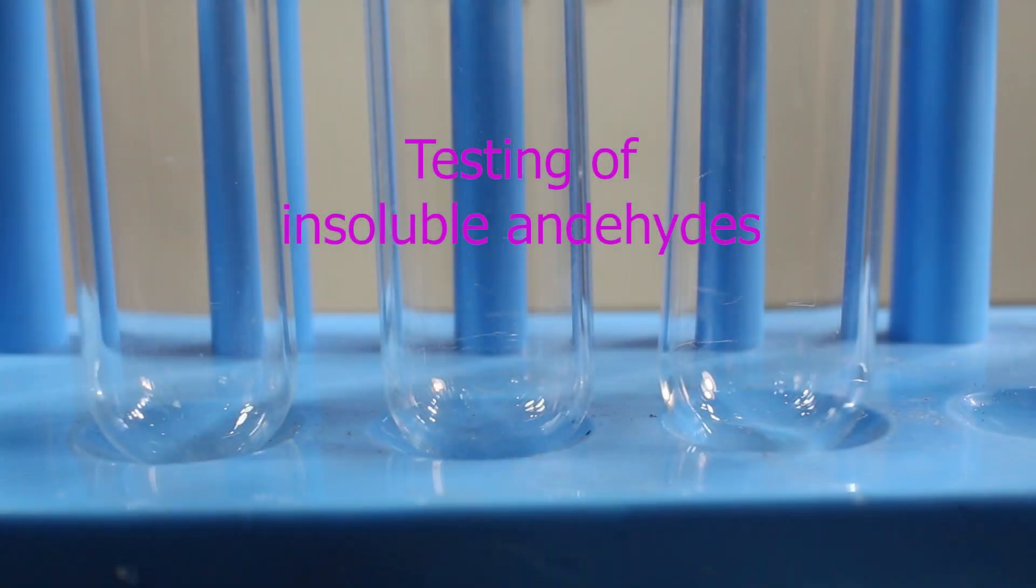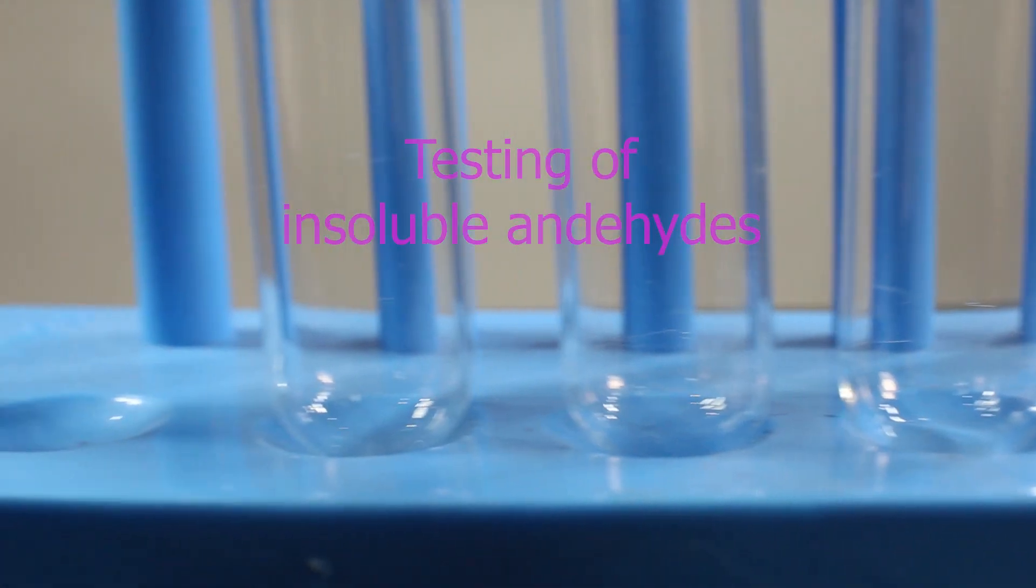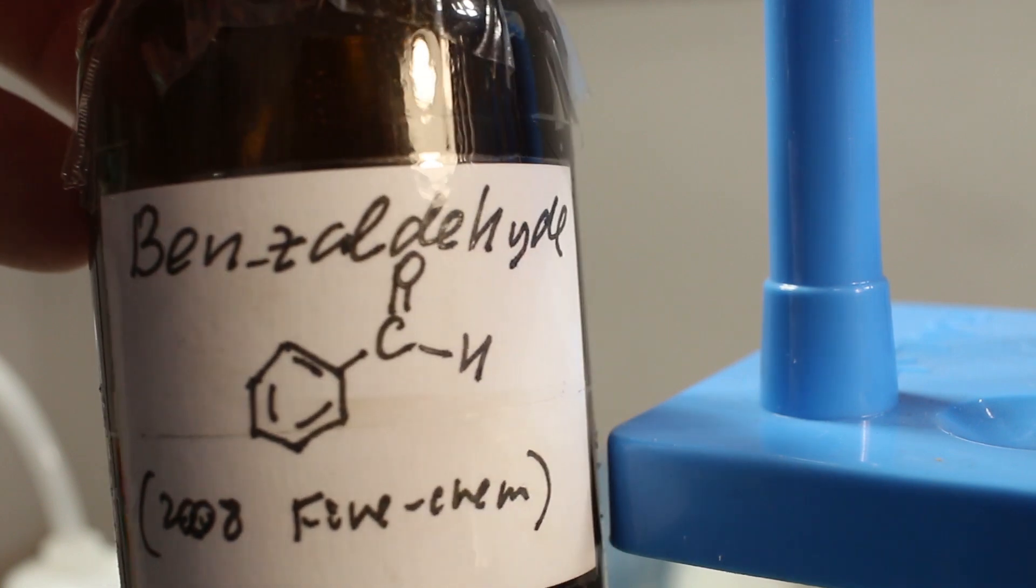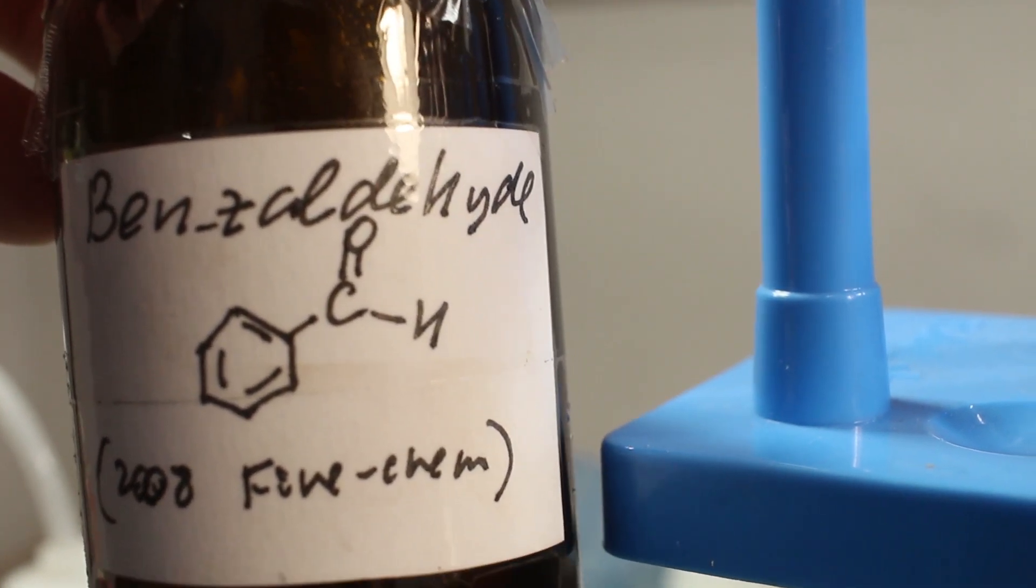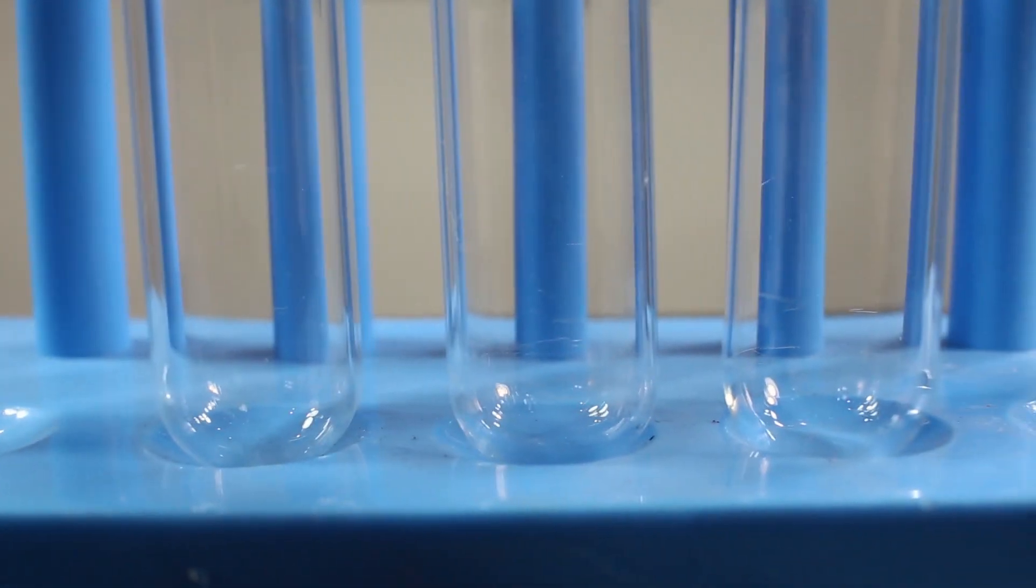Let's see what to do if we have to test insoluble aldehyde. For example, benzaldehyde. It's not soluble in water. We try to dissolve it in alcohol.